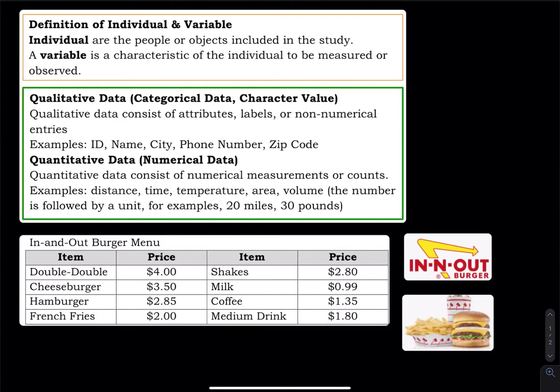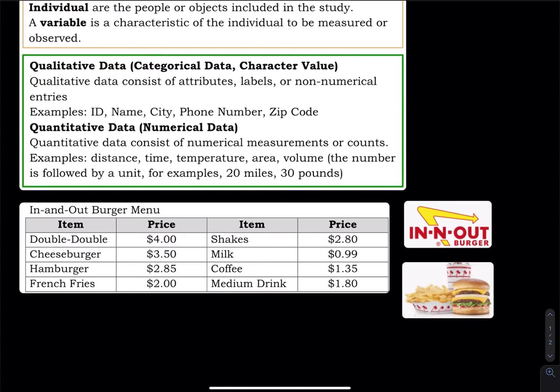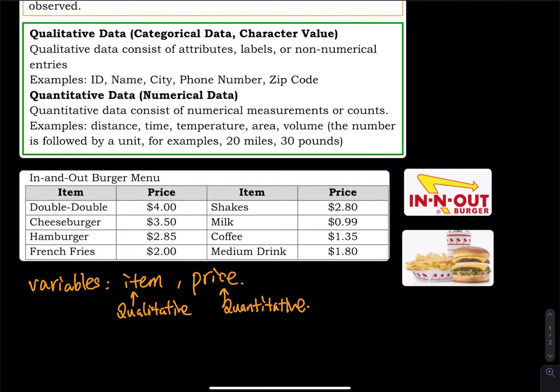So let's take a look at the following data. We have the In-N-Out burger menu. Now tell me, how many variables do we have? How many individuals do we have? So there are two variables - the first one is item, the first one is price. And then item is quantitative - I mean qualitative. And price is quantitative. And then how many individuals? How many items do we have? We have eight items. So there are eight individuals. That's how easy it is.